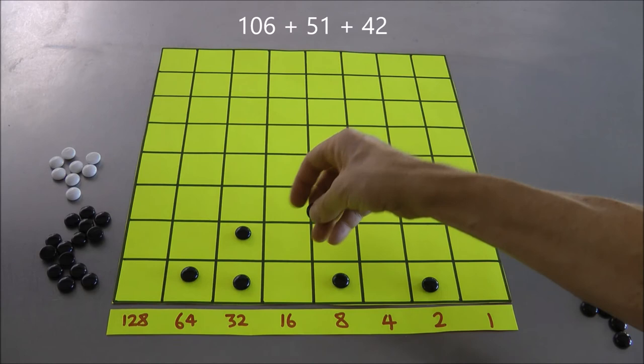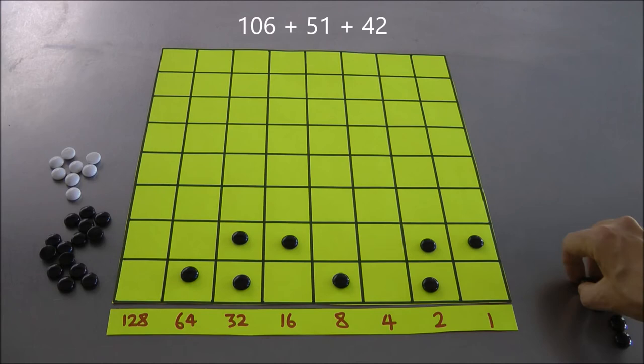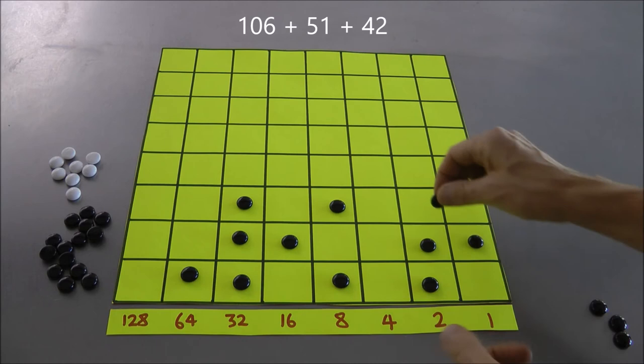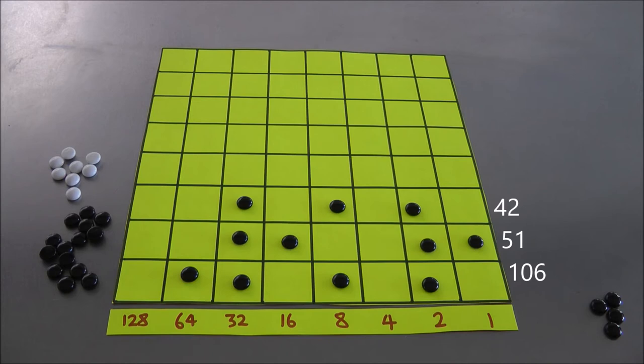And I said 51. Okay. 51. There's going to be a 32 and 16 gets me to 48, 51. Okay. 106 and 51. And then I said 42, I think I said. 32 and 10 more. 8 and 2. Bingo. Alright. There are the three numbers I wish to add.